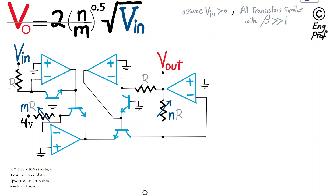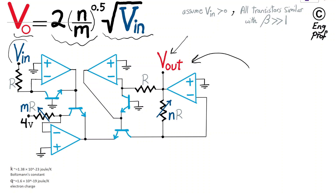A square root analog circuit is shown here in which the computed Vout is proportional to the square root of Vin as applied at the input of the circuit. How is this possible?